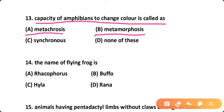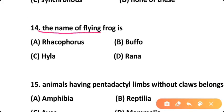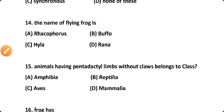The correct answer is Option A — the capacity of amphibians to change color is metachrosis, and it occurs due to contraction and expansion of pigment cells. Question fourteen: The name of the flying frog is — Option A: Rhacophorus, Option B: Bufo, Option C: Hyla versicolor, Option D: Rana tigrina. Correct answer is Option A — the flying frog is Rhacophorus.